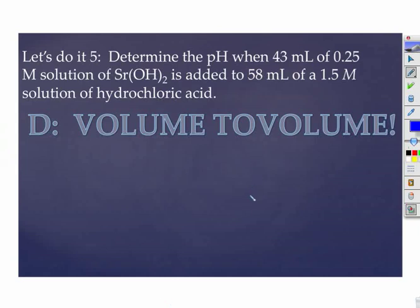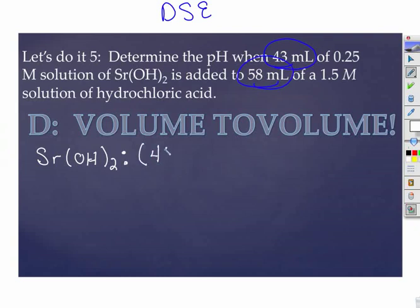All right, let's try another one of the stoichiometries. Don't forget your acronym, DSE. Whenever you add volume to volume to volume, you have to voom voom. So when I add the strontium hydroxide to the hydrochloric acid, both of them are diluted. So my strontium hydroxide is V1 is 43. V2 is 0.25. Now, volume 2 is the sum because we mixed these two beakers.